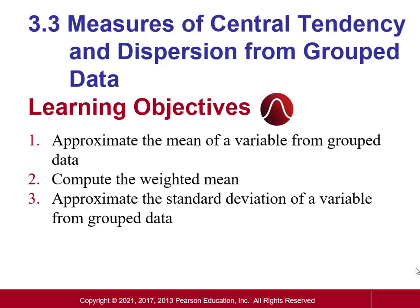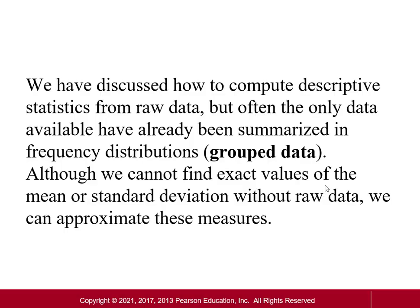In this video we're going to talk about measures of central tendency as well as dispersion from grouped data. The difference from previous sections is that the data is not raw anymore — it's already grouped, maybe in a frequency distribution table or relative frequency distribution. We've discussed how to compute descriptive stats from raw data, but a lot of times that's not possible. We're often given summarized or grouped data, so we can't find exact values like mean or standard deviation, but we can find really good approximations.